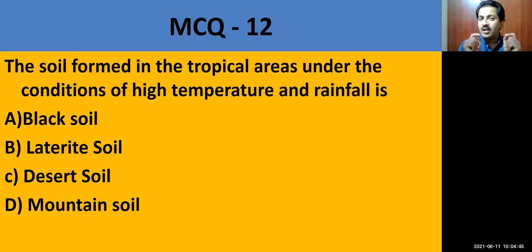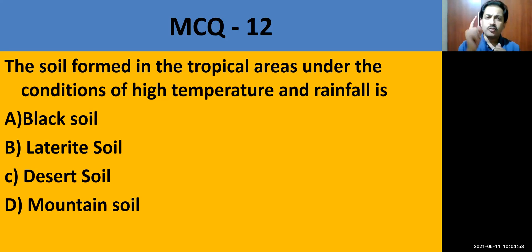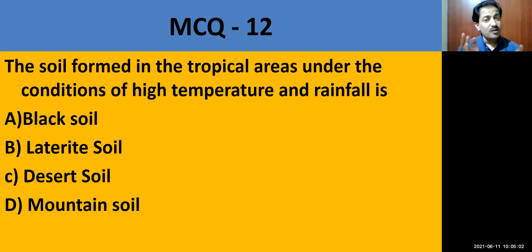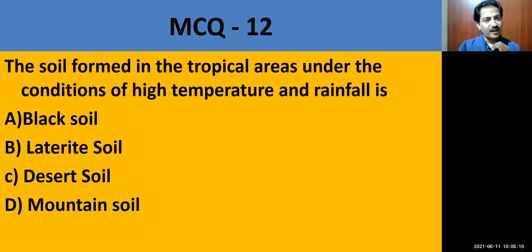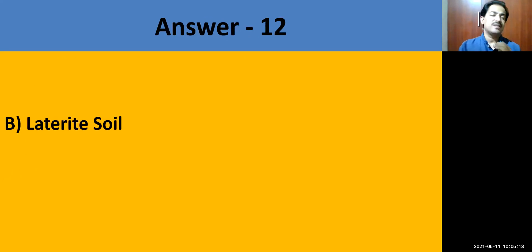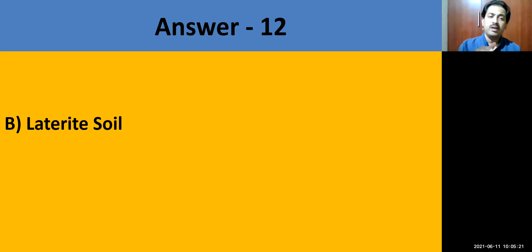Dear students, you are not just answering MCQs — you are learning why the answer is correct, so you must listen to all these classes. MCQ question number 12: The soil formed in tropical areas under conditions of high temperature and high rainfall — options are black soil, laterite soil, desert soil, and mountain soil. The correct answer is laterite soil. Whenever there is heavy rain and high temperature over a period of time, laterite soil is formed.